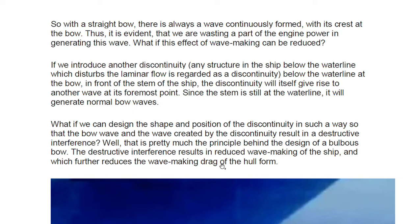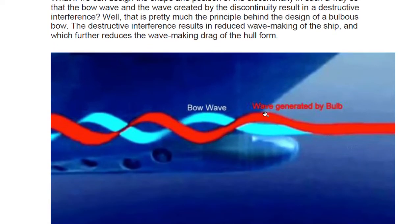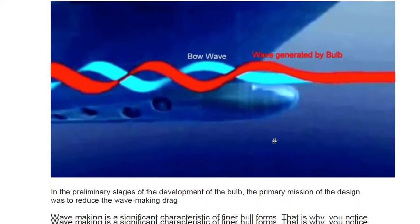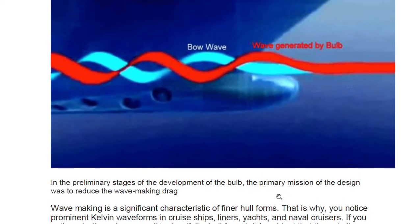The destructive interference reduces the wave-making drag of the hull form. In the preliminary stage of development of the bulb, the primary mission of the design was to reduce wave-making drag in finer hull form vessels.